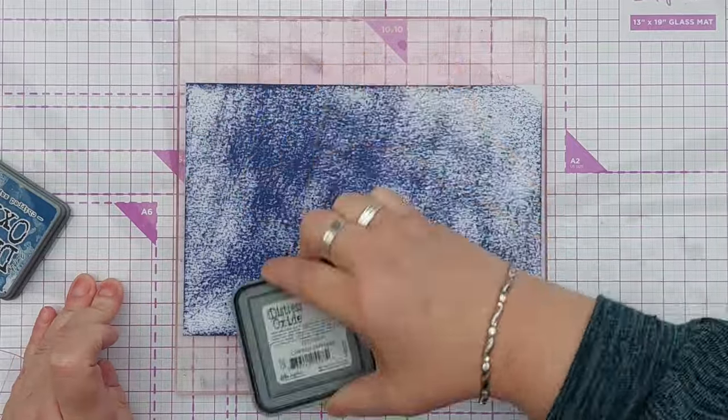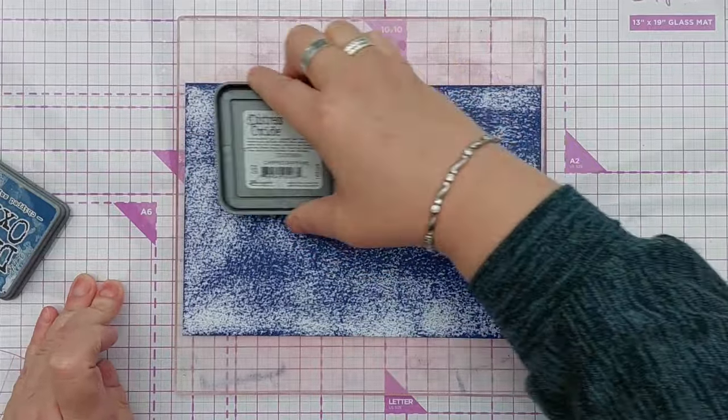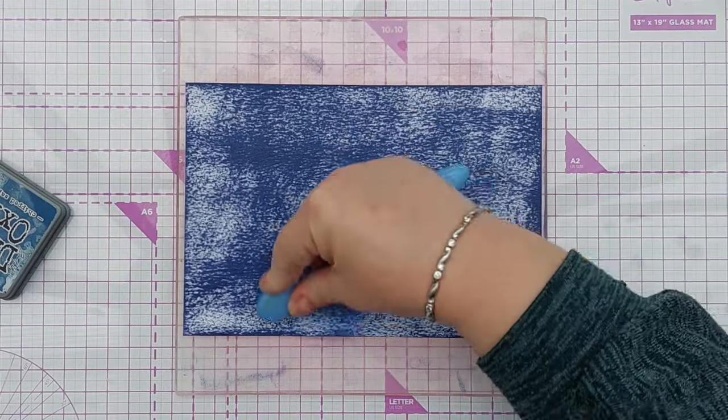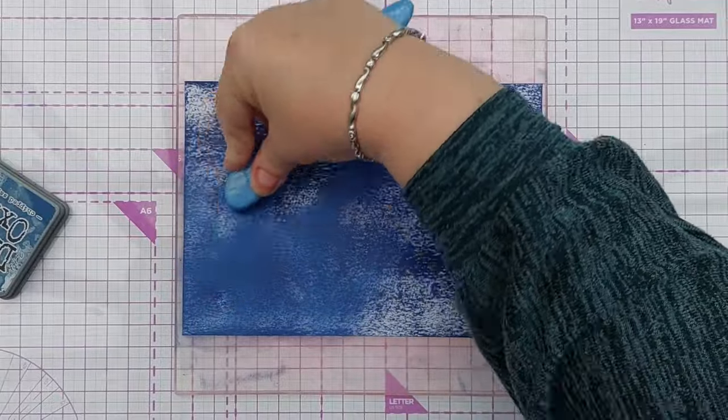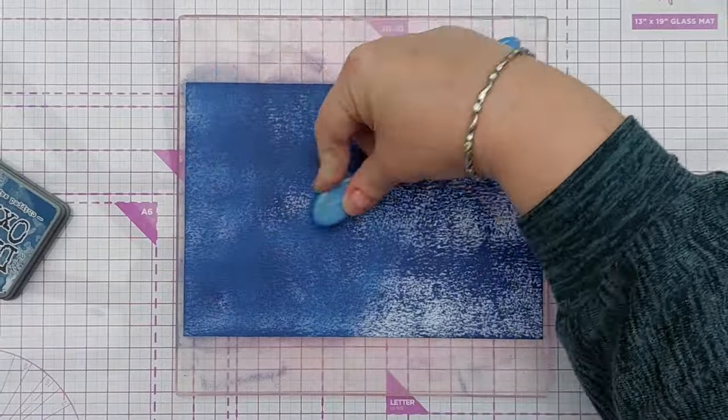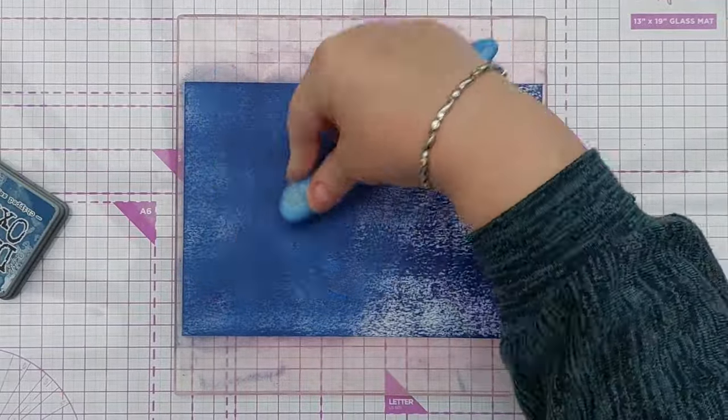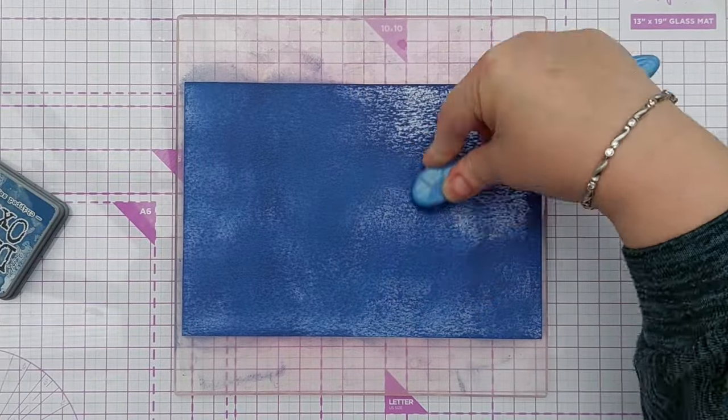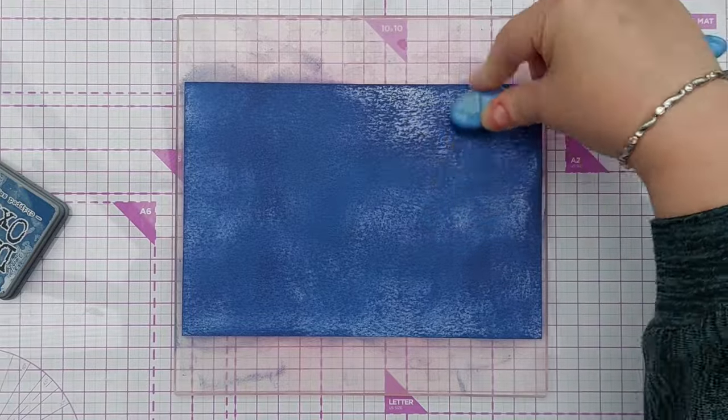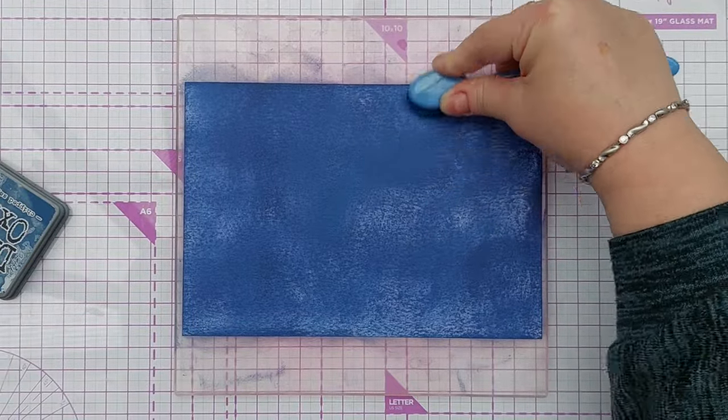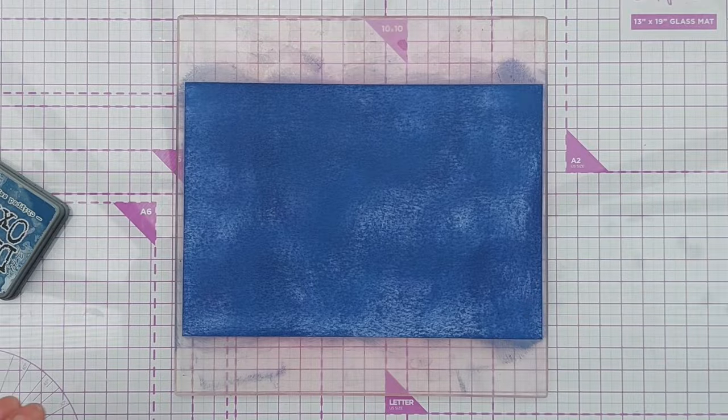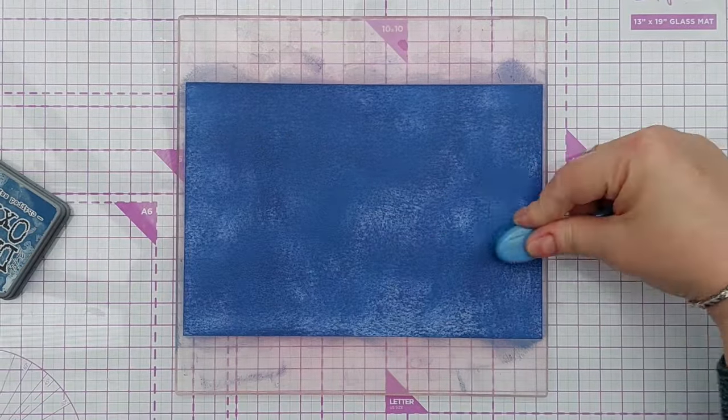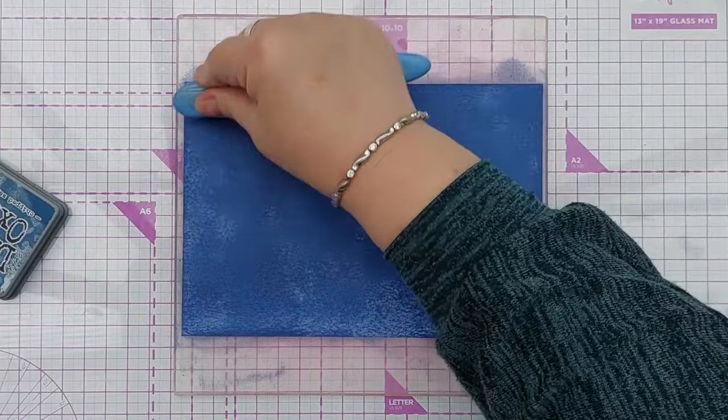So I've got a piece of mixed media paper here and I'm giving it a really liberal application of chipped sapphire distress oxide. I'm not looking for a completely solid color because my mug has a fairly speckled appearance, so I want lots of blue but I'm quite happy with having some white paper peeking through the blue ink.